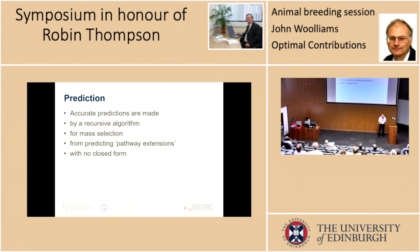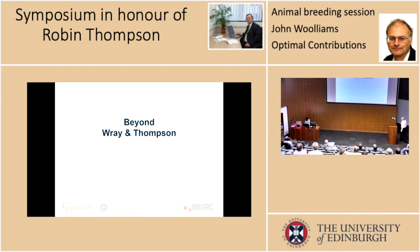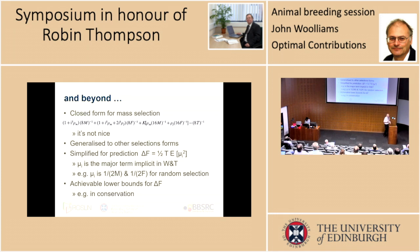The paper itself goes on to make accurate predictions of delta F in mass selection. It uses a recursive algorithm for predicting pathway extensions, but the paper itself doesn't have a closed form. That's really just a stepping stone, because you can generalize this — the paper was about mass selection, but it could be anything to do with truncation selection. Although the theorem is general, the principles set out in the recursion were general to anything in truncation selection. You can simplify the prediction with a bit more work, and one of the terms implicit in the Ray and Thompson paper — though never made terribly explicit — is the expected long-term contribution of an ancestor conditional on its particular selective advantages.